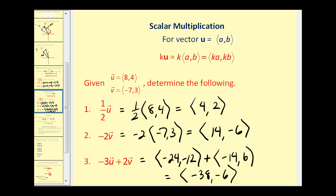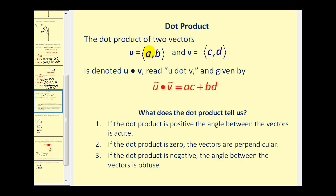Let's finish off by talking about dot product. The dot product of vector U and vector V is denoted U · V, and it's given by A times C plus B times D — we find the product of the horizontal and vertical components and then sum them. The dot product tells us information about the two vectors: if the dot product is positive, the angle between the vectors is acute; if it equals zero, the vectors are perpendicular or orthogonal; and if it's negative, the angle between them is obtuse.